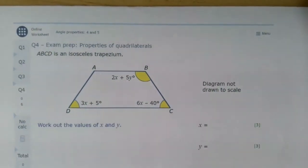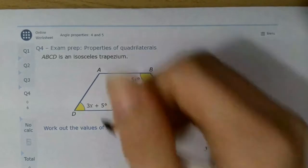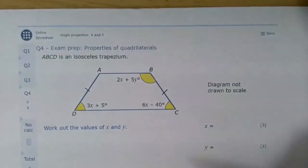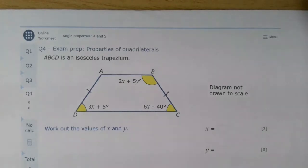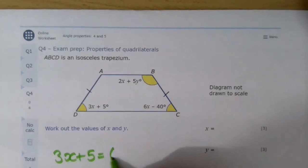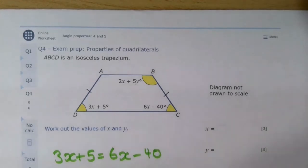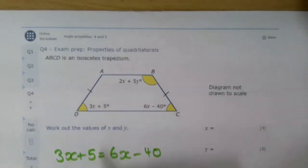Looking at the final question, we've got an isosceles trapezium. Now it's important that it's an isosceles trapezium because what that means is that these two sides are equal, and if you can imagine if we extended that, we'd get an isosceles triangle. But what that also means is that the top two angles are equal and the bottom two angles are equal. So we can work out the value of x and y by forming equations. So angle D equals angle C, so 3x add 5 equals 6x take 40, and we can solve those equations.